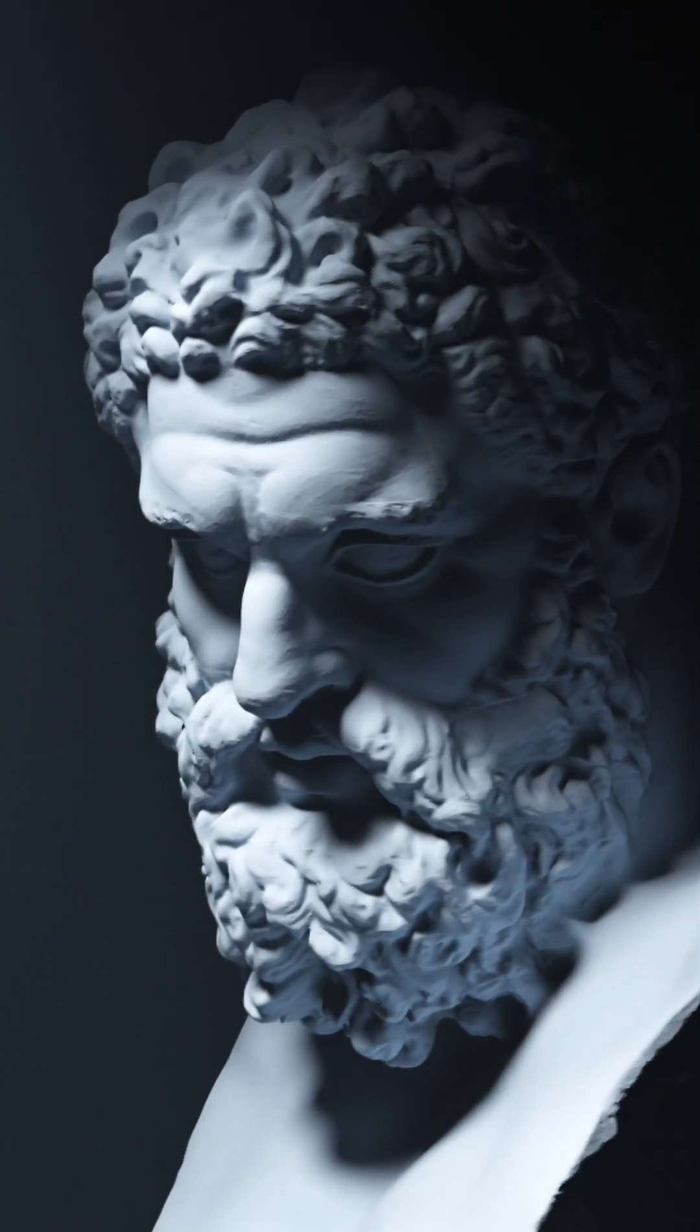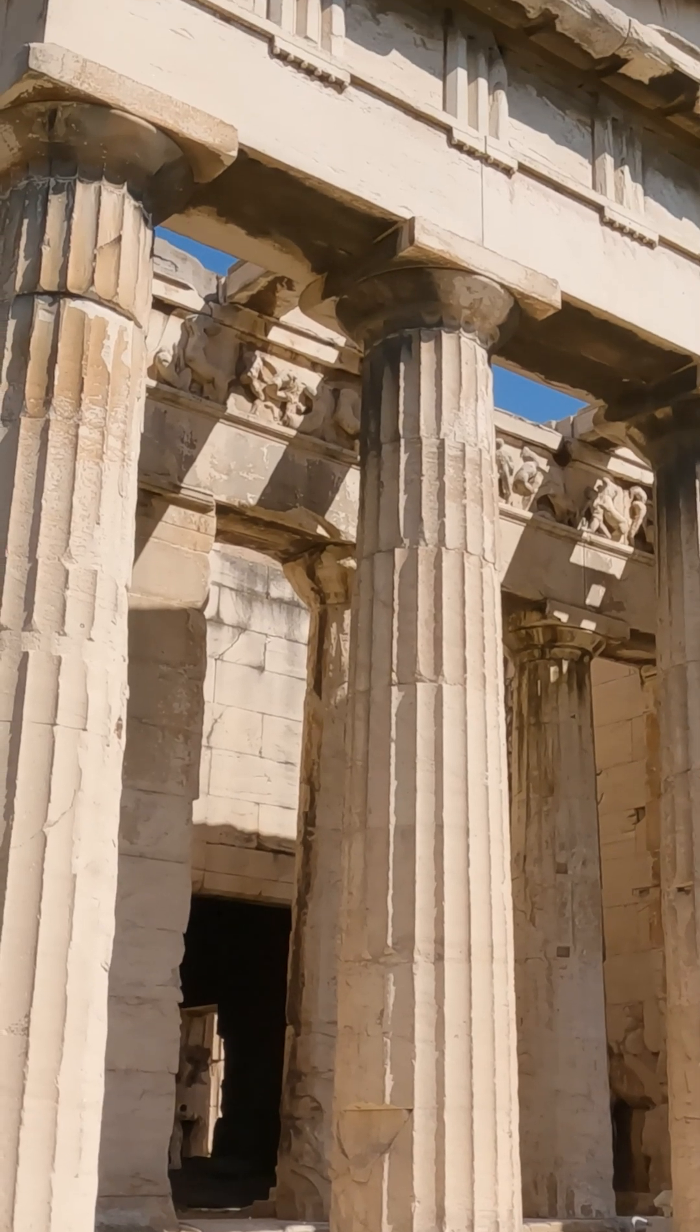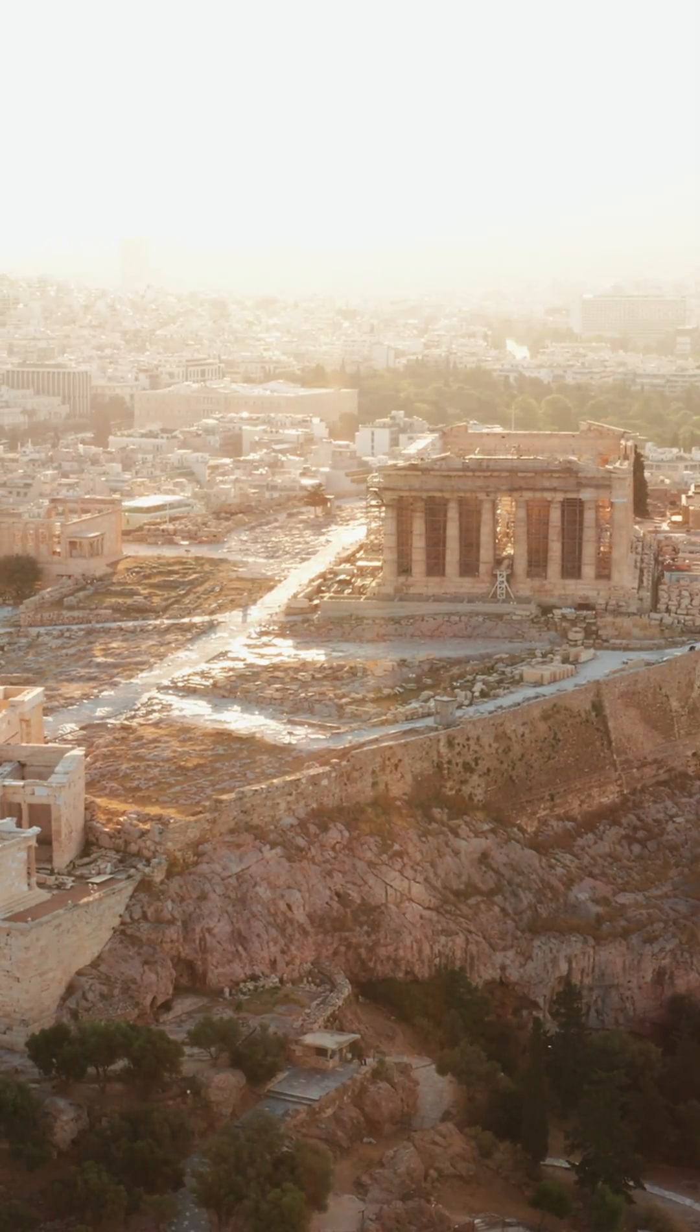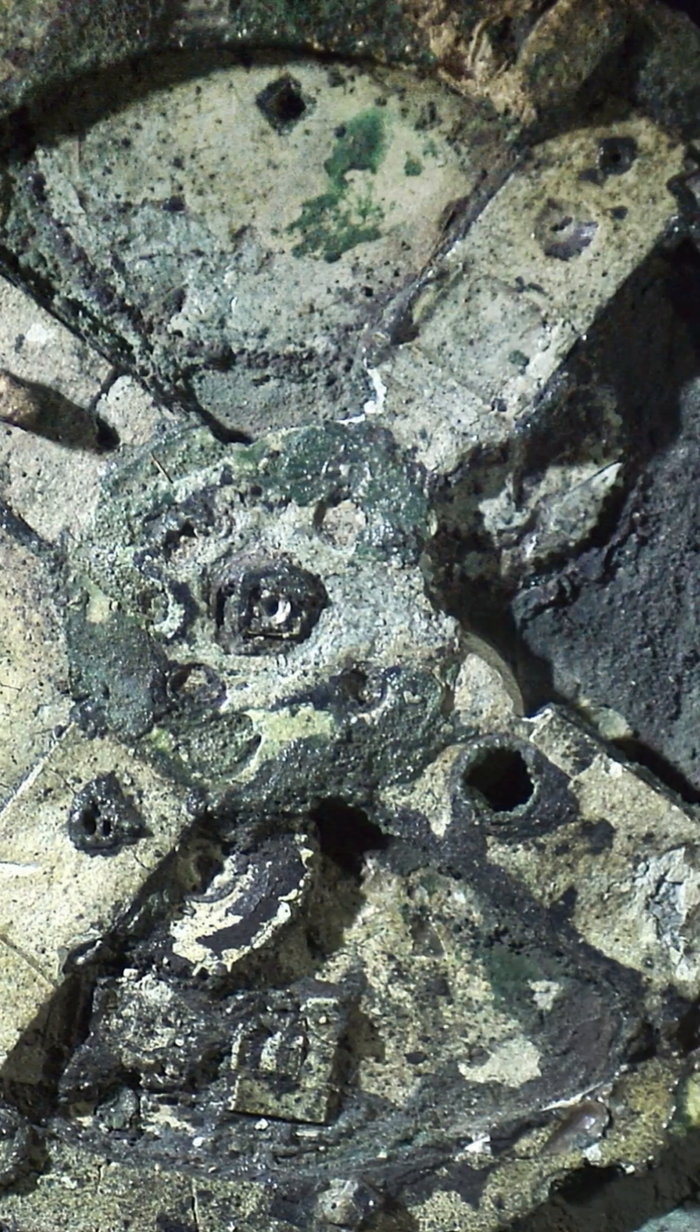Dating back to the 2nd century BCE, the Antikythera mechanism is a true marvel of ancient engineering. Discovered in a shipwreck off the coast of Greece, this intricate device has puzzled researchers for decades.